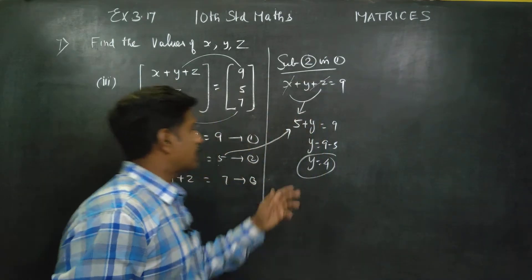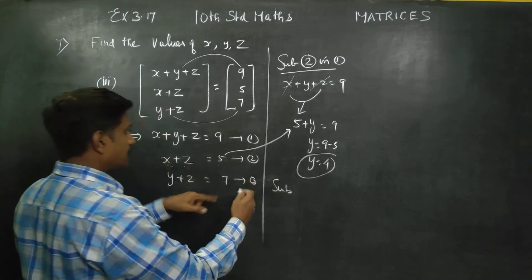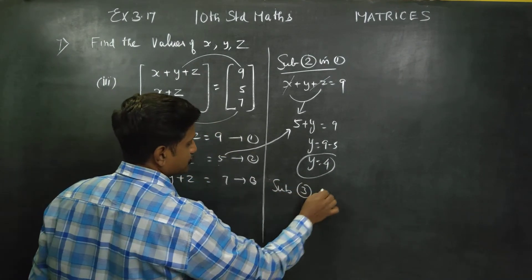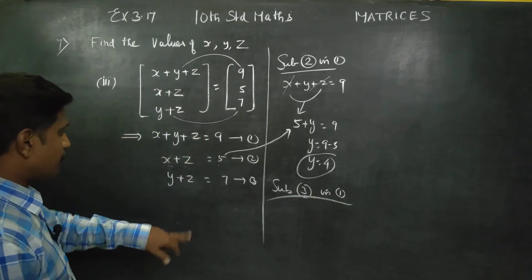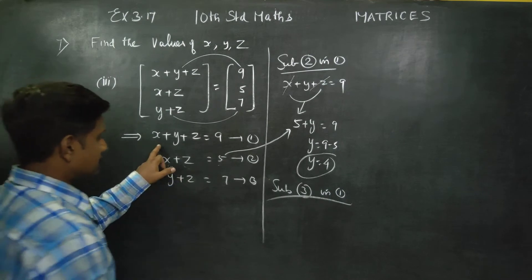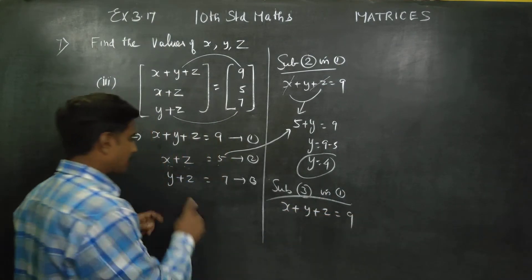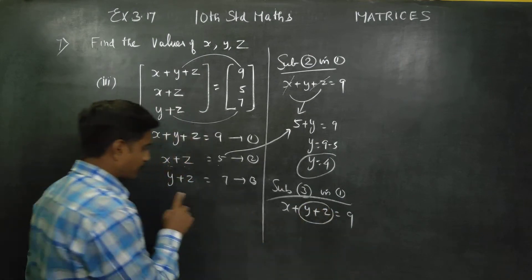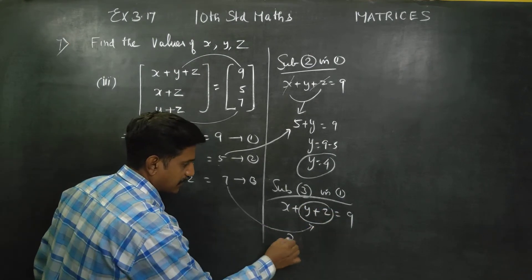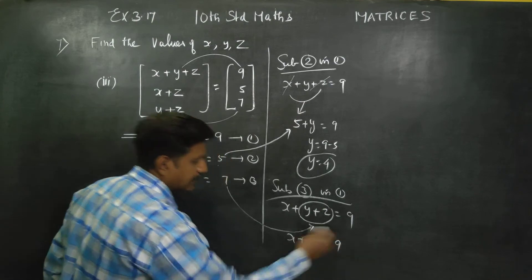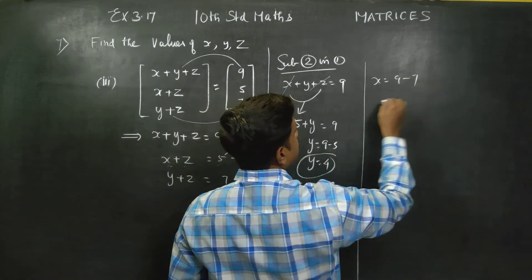First sum answer found. Now substitute the third equation. The third equation gives y plus z; the first equation is x plus y plus z is equal to 9. Now y is equal to 9, x plus 7 is equal to 9, x is equal to 9 minus 7, x is equal to 2.